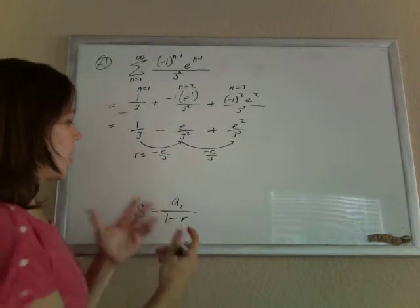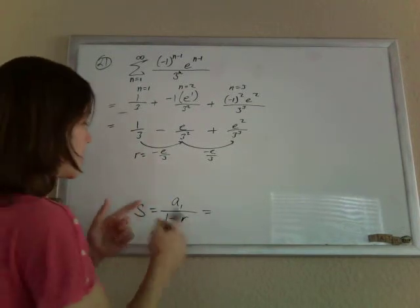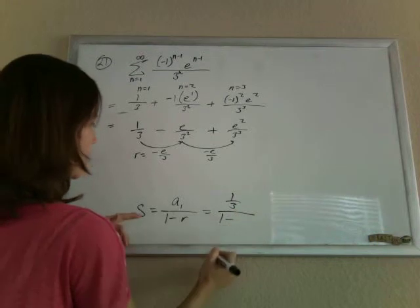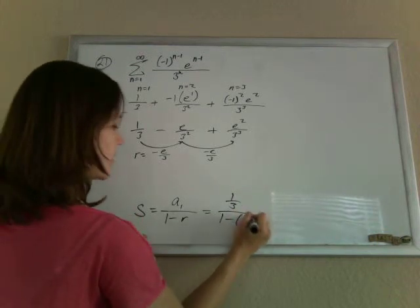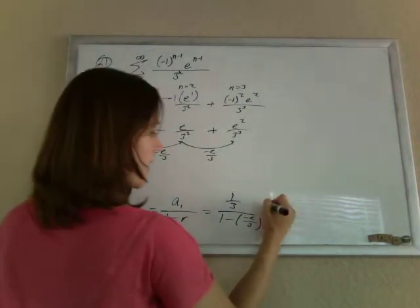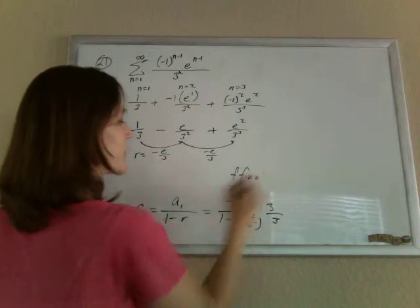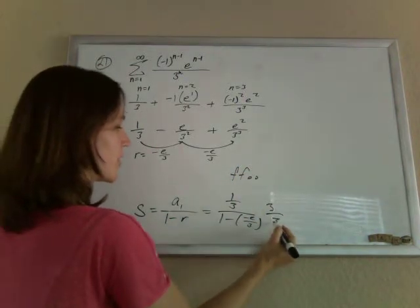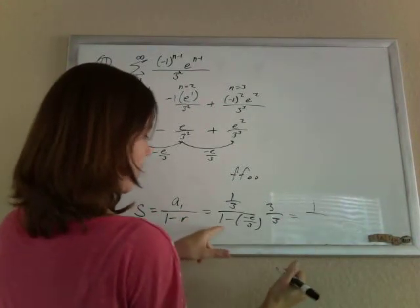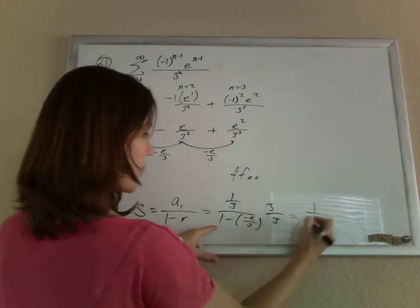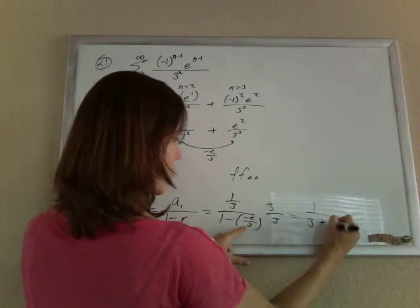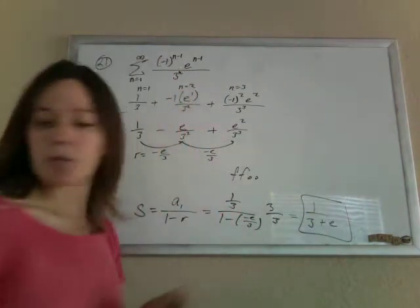is negative e over 3. And so now we have enough to plug it into this handy-dandy formula, that the first term is a third, and the common ratio is negative e over 3. And that's the hard part. All we've got to do is clean it up now. If I multiply by a fancy form of 1, my fancy form of 1 here is 3 over 3. So 1 third times 3 is 1. And distributing the 3 to the bottom, that'll be 3 plus e. The 3 will cancel out. So 3 plus e.